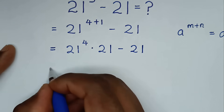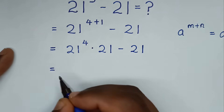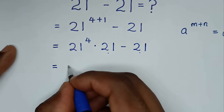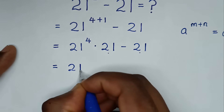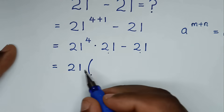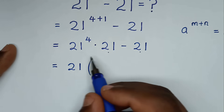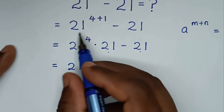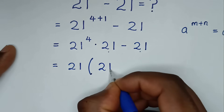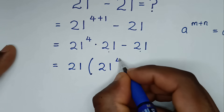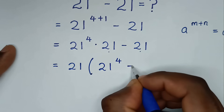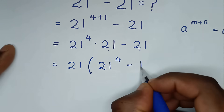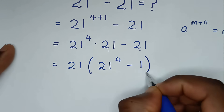From here, 21 is common, so we take 21 out of the bracket: 21 times bracket, 21 power 4 times 21 divided by 21 is 21 power 4, minus 21 divided by 21 is 1, close bracket.